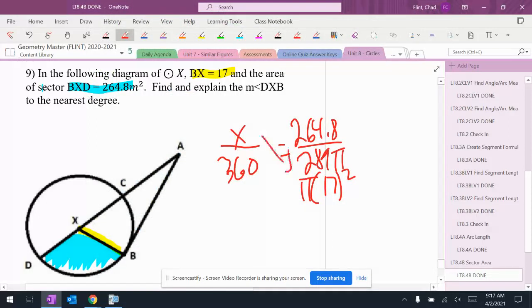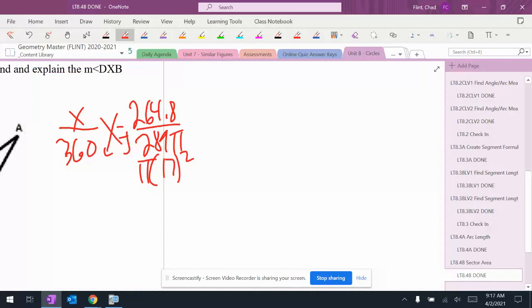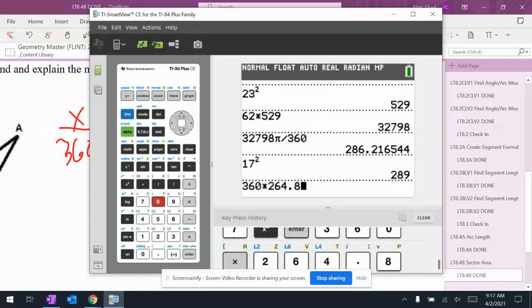And then an X up here. So I do my cross multiplication and I get 289 pi X equals 360 times 264.8, which gives me 95,328.